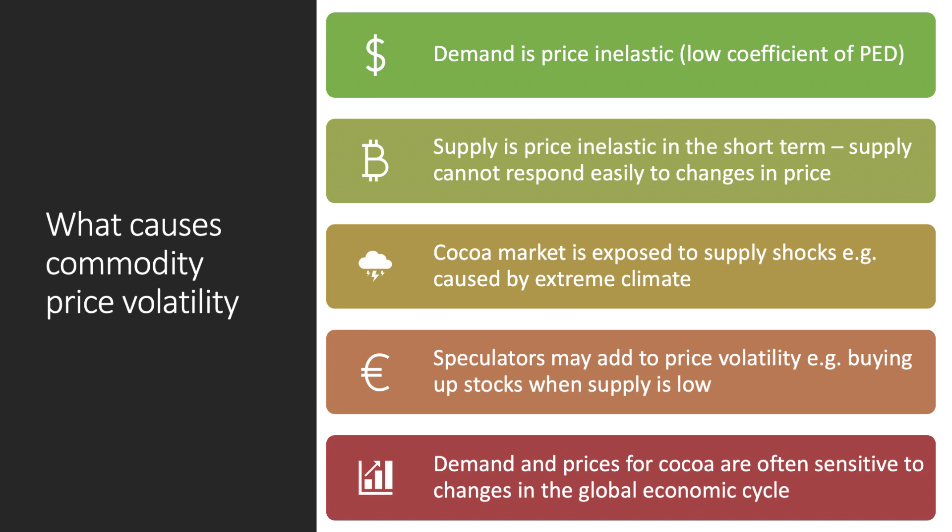The cocoa market is highly volatile. A key reason is that demand for cocoa tends to be fairly price inelastic — the price elasticity of demand coefficient is less than one. Equally, supply is also inelastic in the short term: it is very difficult to grow more cocoa beans quickly in response to a price change. Volatility is also caused by exposure to supply shocks such as climate events, the impact of speculation, and the sensitivity of demand to changes in the global economic cycle.